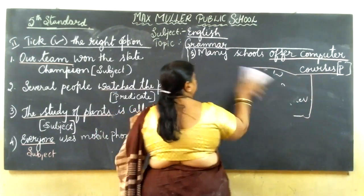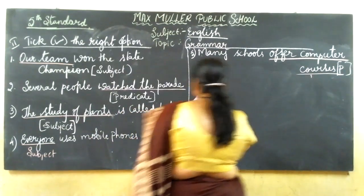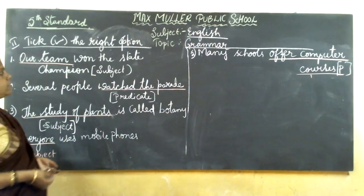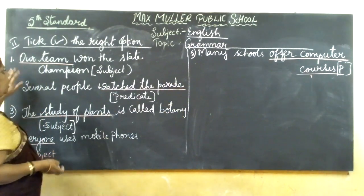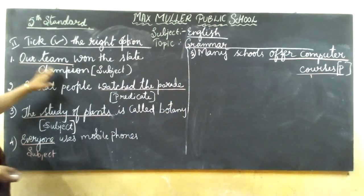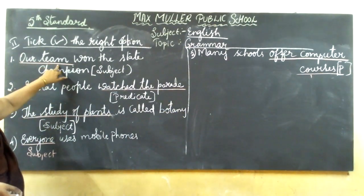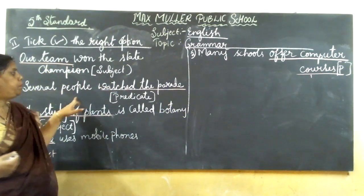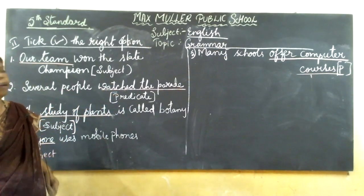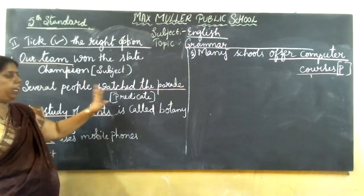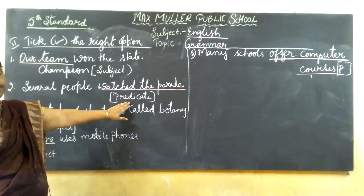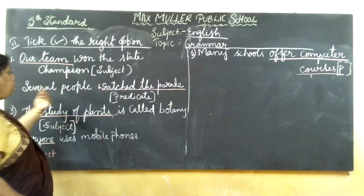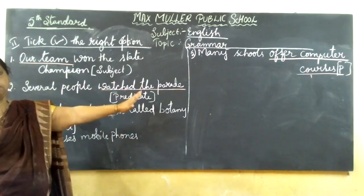Now coming to the class — think the right option, whether it should be subject or predicate. I have explained already twice. Here also with sentences I am going to say: 'Our team won the state championship' — our team is the subject, we are talking about the team. 'Several people watch the parrot' — several people is the subject, what they watched the parrot becomes the predicate. If 'our team' becomes a subject, the rest of the sentence becomes a predicate. Here, 'several people' is the subject and 'watch the parrot' is the predicate.